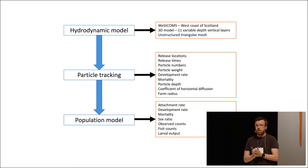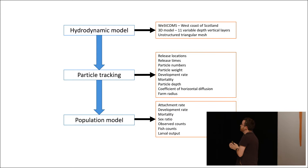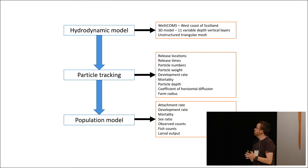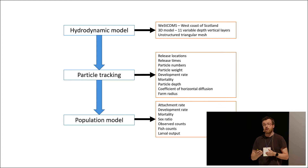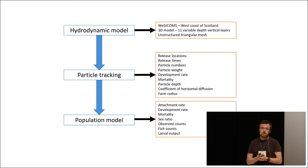A little bit of information about the type of data I'm dealing with. To drive the particle tracking tool, we need a hydrodynamic model. The one I use is WESCOMS — the west coast of Scotland model, based on FVCOM. It's a 3D model with 11 variable depth layers, based on an unstructured triangular mesh, which is really useful for capturing the complex coastlines of Scotland.